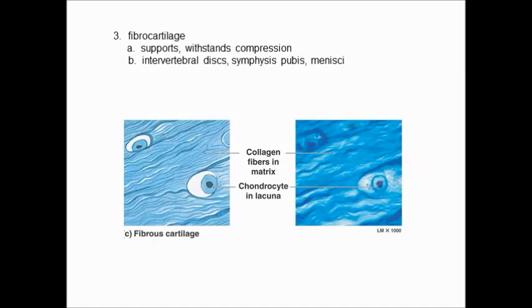The next level of cartilage has a lot more collagen and is called fibrocartilage. It looks much like the dense regular connective tissue of ligaments, but surrounded by chondroitin sulfate — a very dense, almost pad-like material. Fibrocartilage is present between our vertebrae, forming the discs that cause tremendous pain as we age, at the pubic symphysis between the two os coxae bones, and in the menisci in our joints that protect bones from bouncing together.